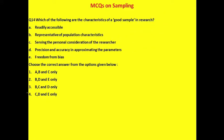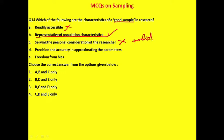Question 14: Which of the following are characteristics of a good sample? Options: readily accessible, representative of population characteristics, serving the personal consideration of the researcher, precision and accuracy in approximating the parameters, and freedom from bias. Readily accessible is not ideal as it compromises representativeness. Serving personal consideration introduces bias and makes results invalid. Representative of the population, precision and accuracy, and freedom from bias are all important characteristics of a good sample. The correct answer is options B, D, and E — option 2.